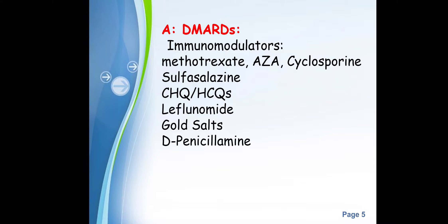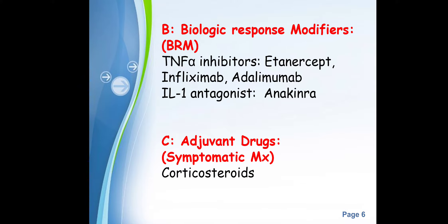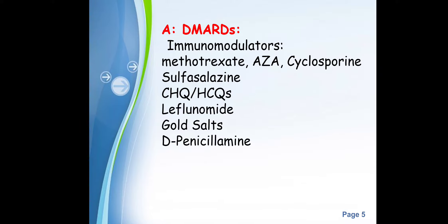The drugs used to treat rheumatoid arthritis are divided into two groups. First are DMARDs — Disease Modifying Anti-Rheumatoid Drugs — and second are adjuvant drugs. Within DMARDs, we have two types: non-biological agents, which include immunomodulators like methotrexate, azathioprine, cyclosporine, and sulfasalazine, and biological agents, which are biological response modifiers. Adjuvant drugs form the third category.